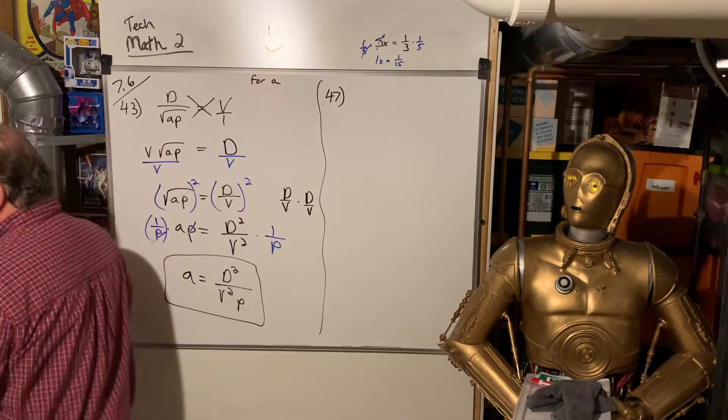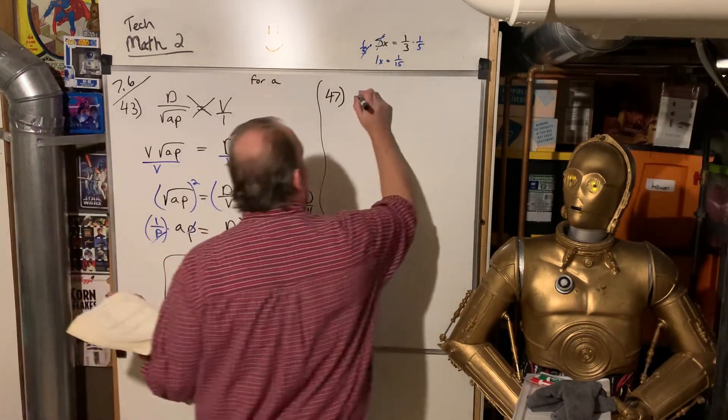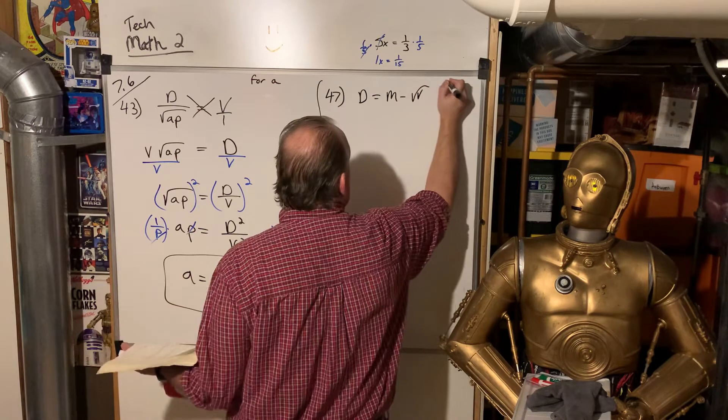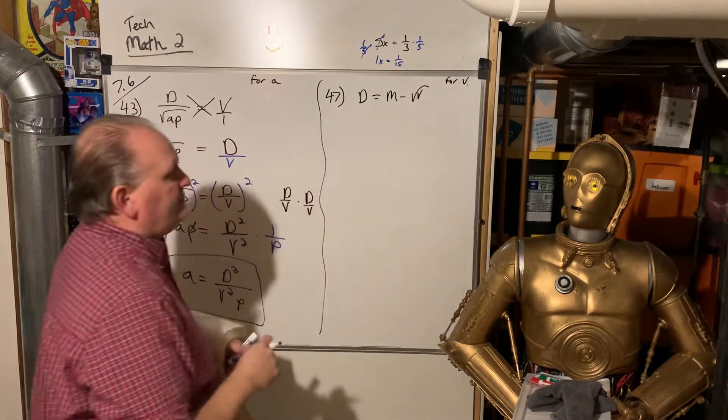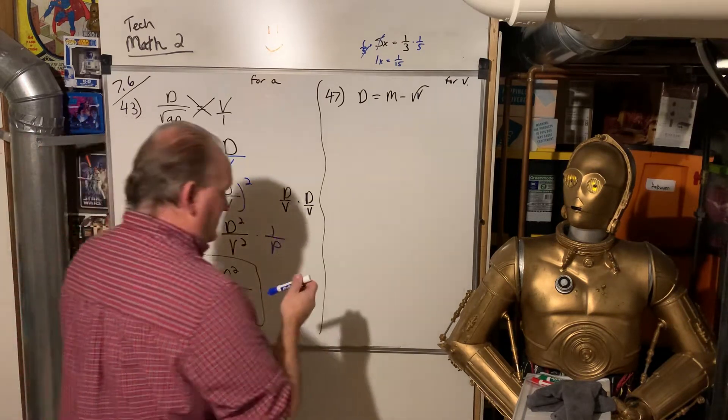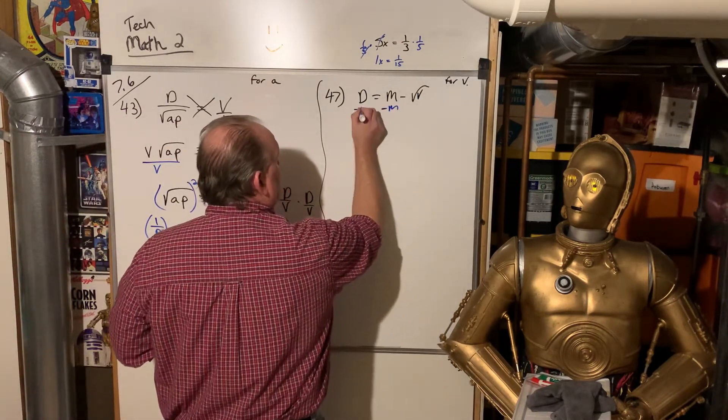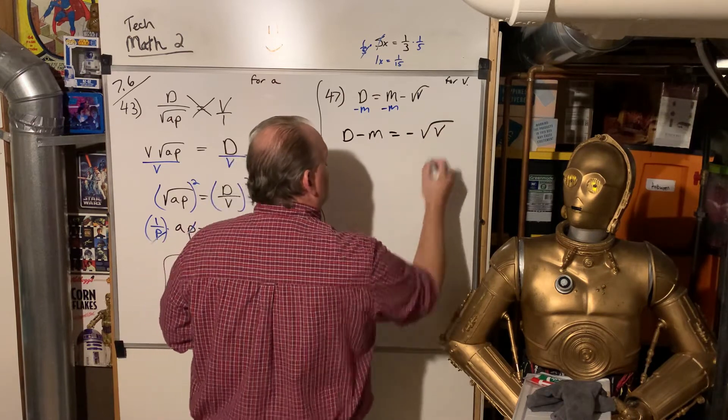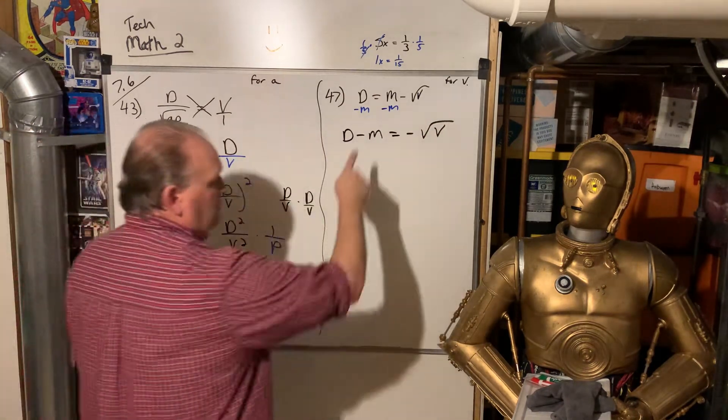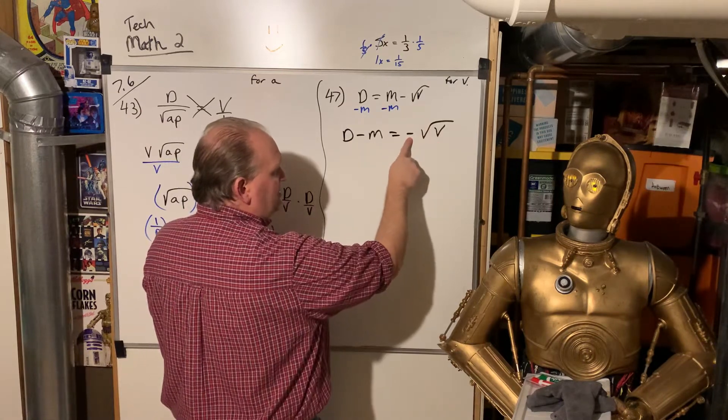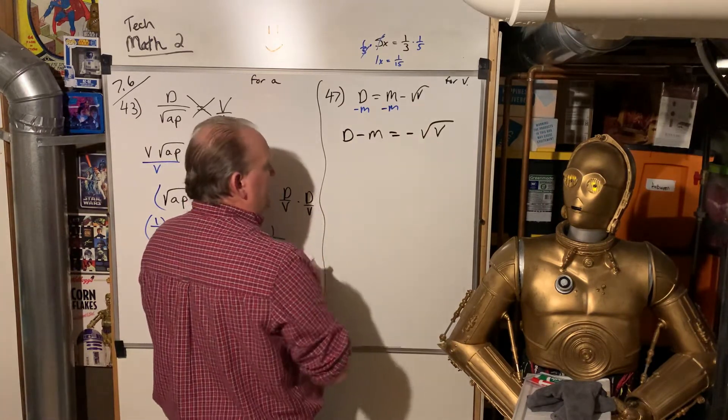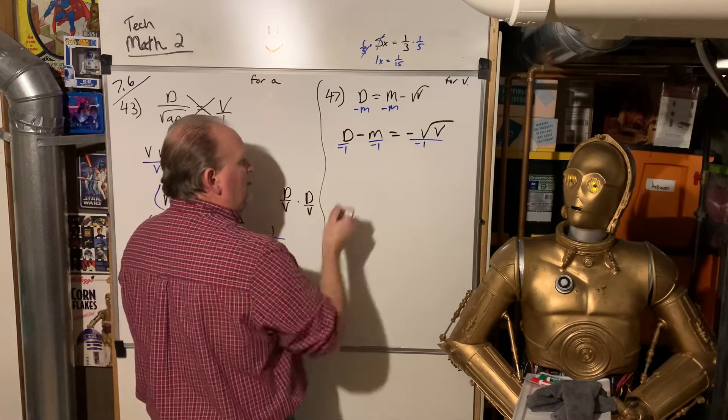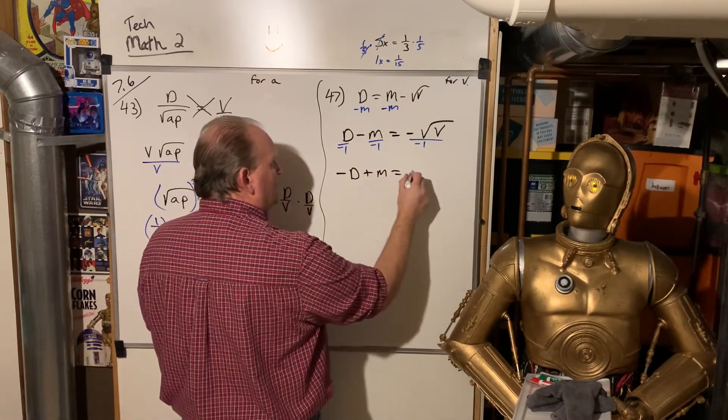For 47, we've got D equals M minus the square root of V. And they want us to solve for V. We subtracted M, we isolated the V. But there's still a negative in front of it. So, before we square both sides, we have to divide everything by negative 1.